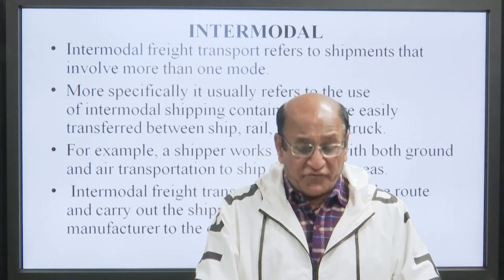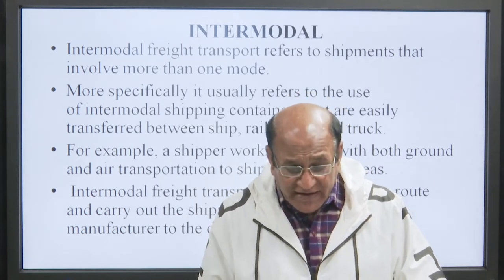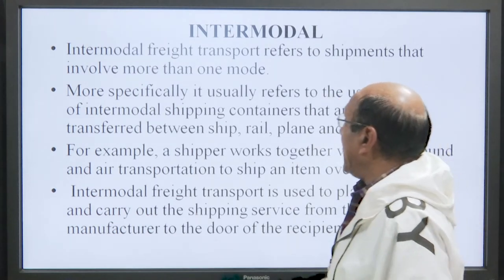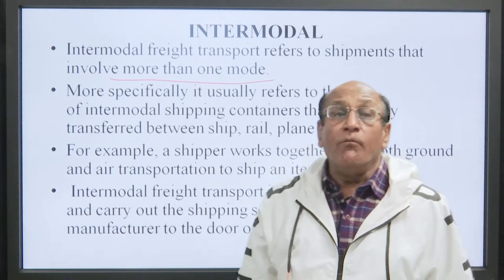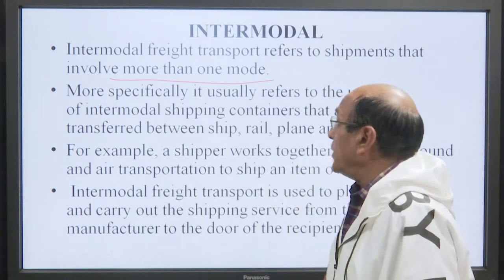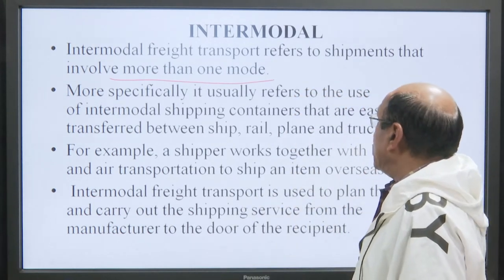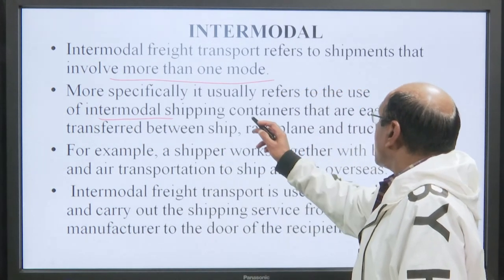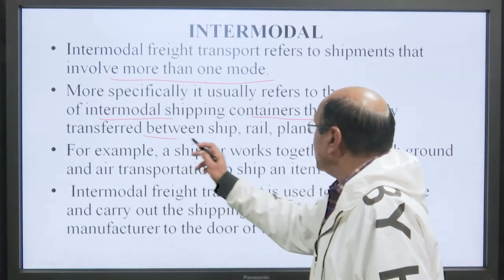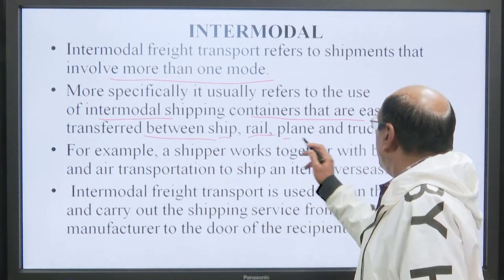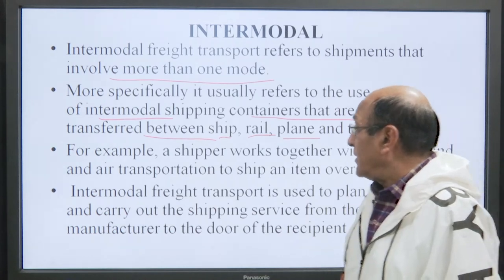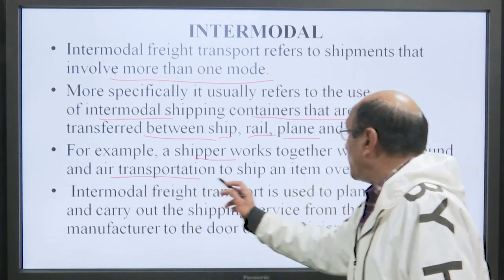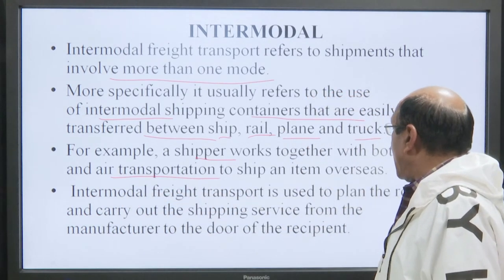Intermodal freight transport refers to shipments that involve more than one mode. More specifically, it usually refers to the use of intermodal shipments — for example, shipments that are easily transferred between ship, rail, planes, and truck. For example, a shipper works together with both ground and air transport to ship an item overseas.